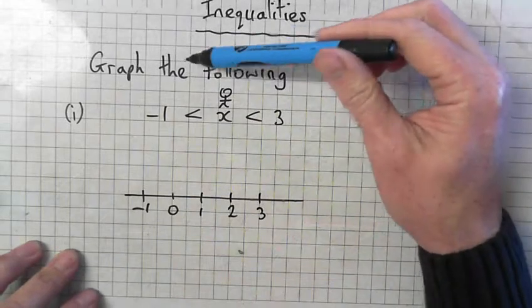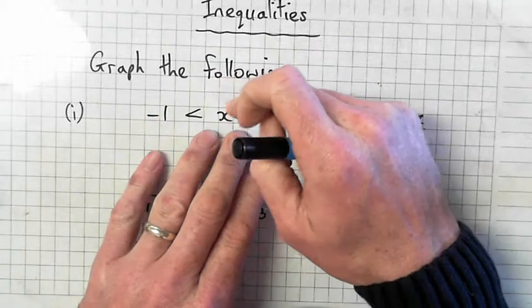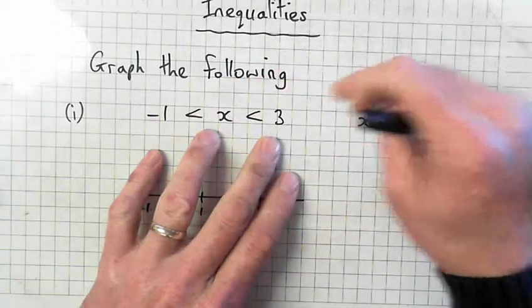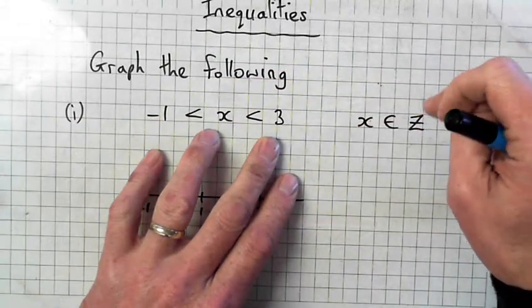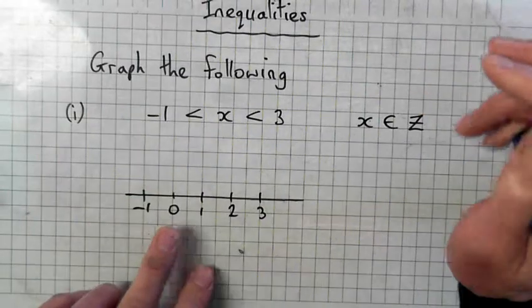So you have to graph the following line. This is what you're given: minus 1 is less than x is less than 3, x is an element of Z. So Z means we're going to put dots on our number line. So here's our number line.